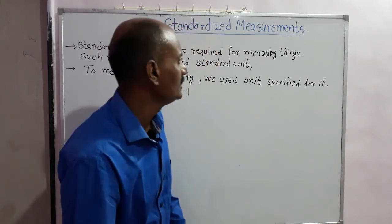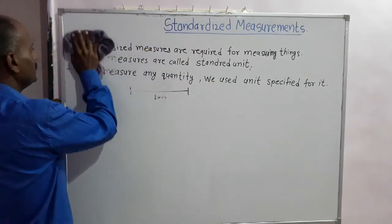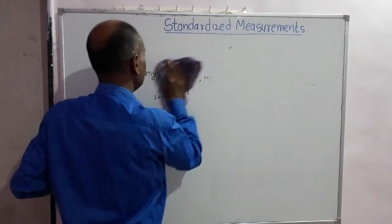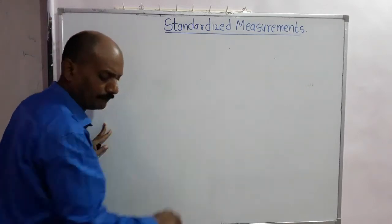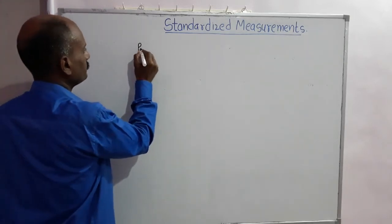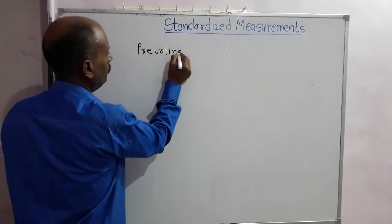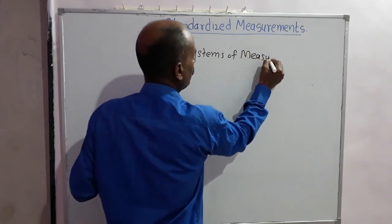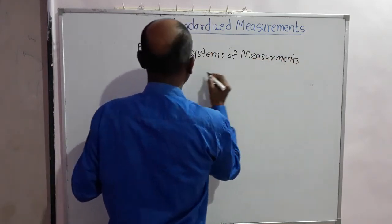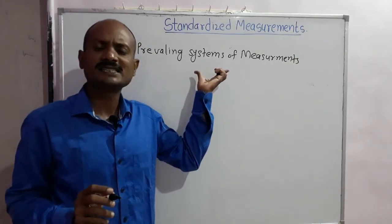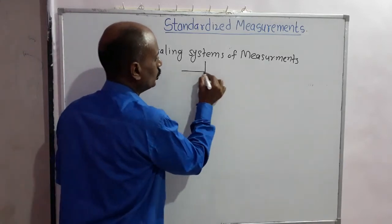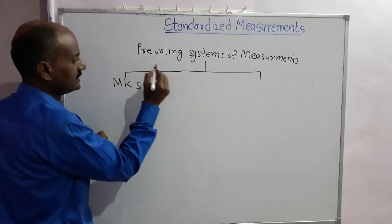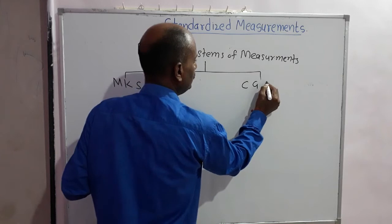There are two prevailing systems of measurement. The first is called the MKS system and the second is called the CGS system.